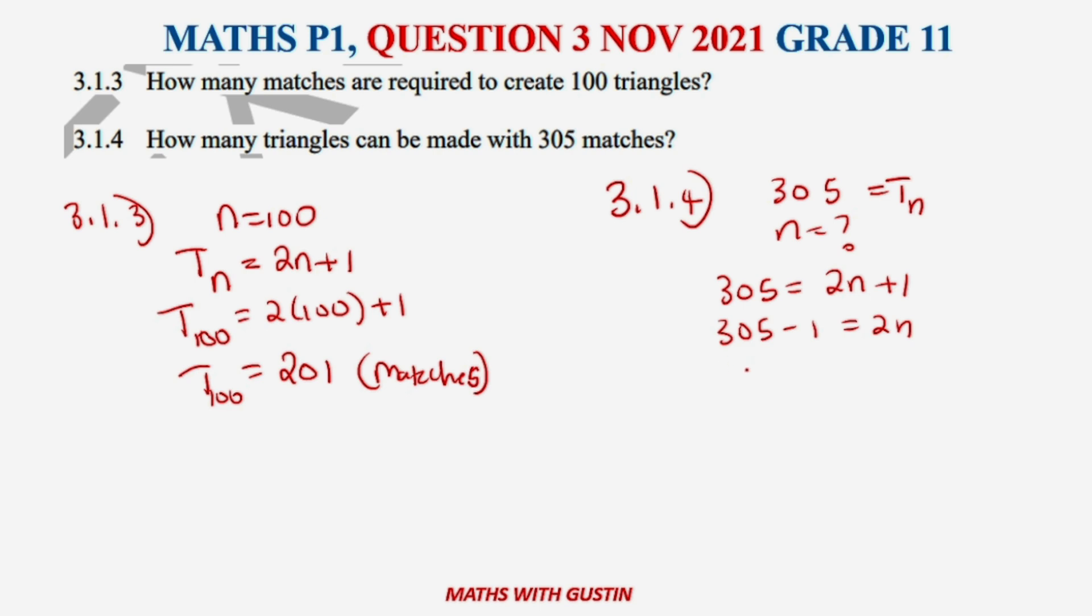Divide by 2 both sides: n equals 152. And that's the value of n. So if you've got 305 matches you can make 152 triangles.